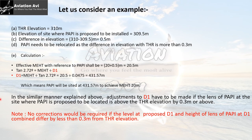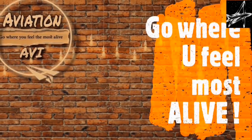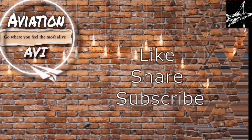In a similar manner, adjustments to D1 must be made if the lenses of the PAPI at the proposed site are above the threshold elevation by 0.3 metres or more. No correction is required if the level at the proposed D1 and the height of the PAPI lenses at D1 combined differ by less than 0.3 metres from the threshold. This was all — hope you now understand how to calculate D1 and how to correct it according to the elevation difference between the PAPI Unit B and the threshold. Please like, share, and subscribe — your support is our motivation. Thank you.